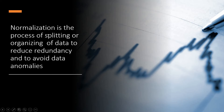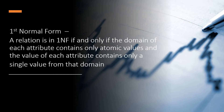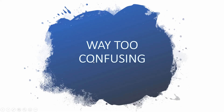So what's the standard definition of first normal form? Wikipedia says that a relation is in first normal form if and only if the domain of each attribute contains only atomic values, and the value of each attribute contains only a single value from that domain. Well, that definition sounds far too complex than first normal form itself.